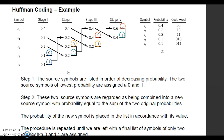Let us see the problem which is covered on the screen. We have 5 different symbols from S0 to S4 and the different values of probability: 0.4, 0.2, 0.2, 0.1, and 0.1. So in step number one, we arrange the symbol and corresponding value of probability in decreasing order. In the first column you can write the symbol, and in the next column you can write the probability in decreasing order.